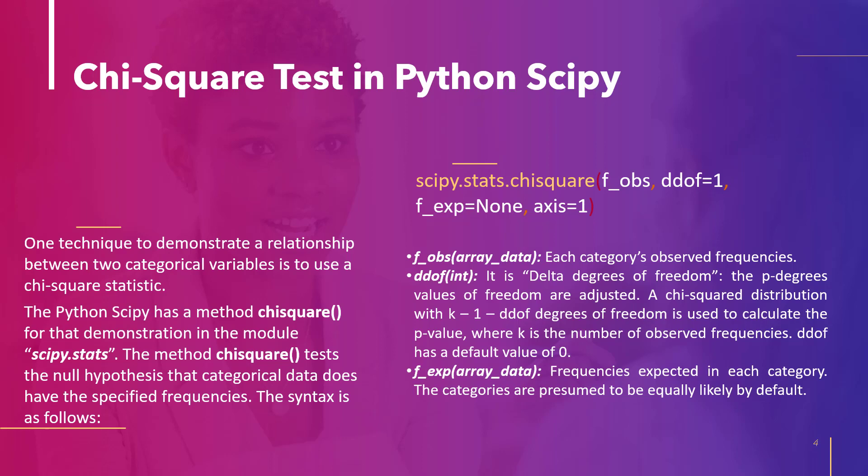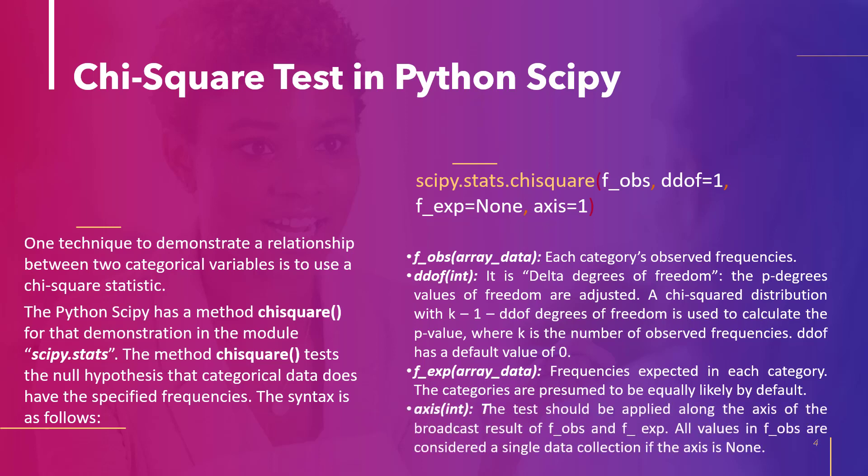Another parameter is f_exp, which represents the expected frequencies in each category. By default, the categories are assumed to be equally likely. The test is run along the axis of the broadcast result of f_obs and f_exp. If the axis is set to None, all values in f_obs are processed as one data set, and 0 is the default value of axis.